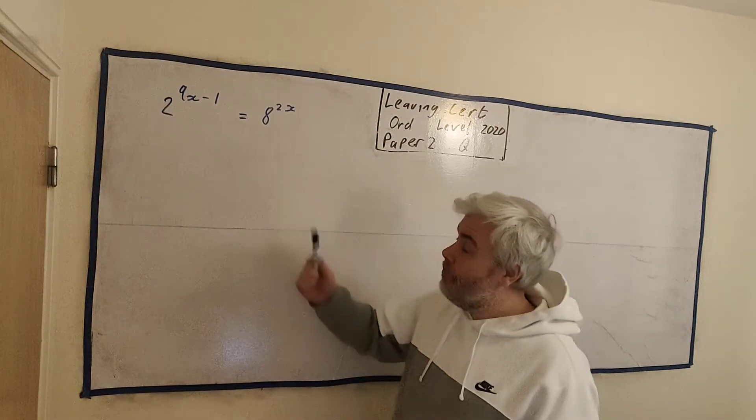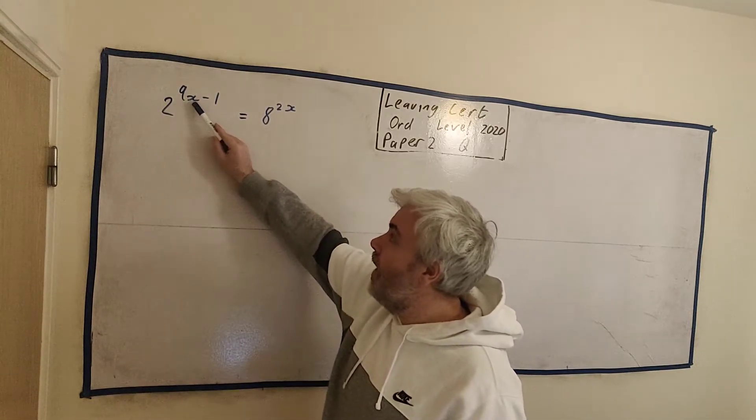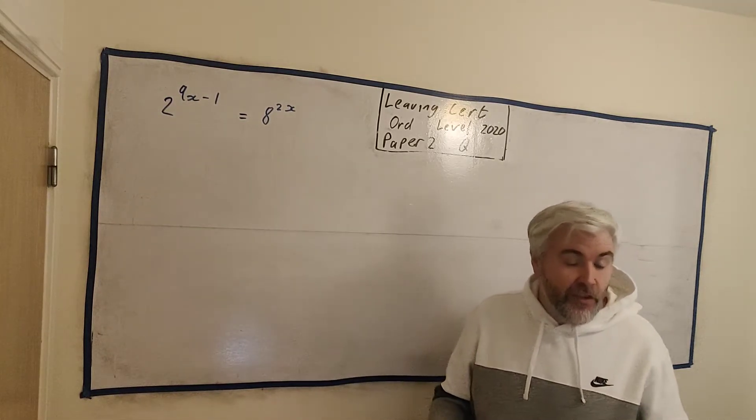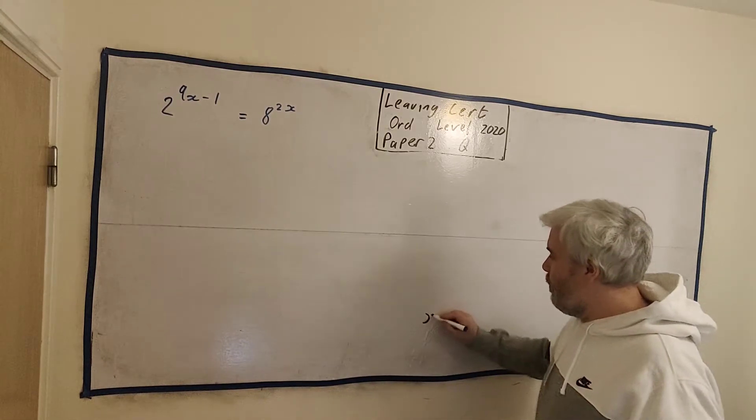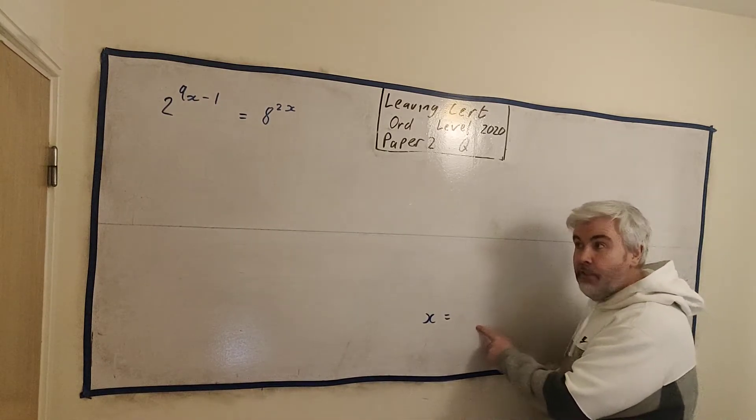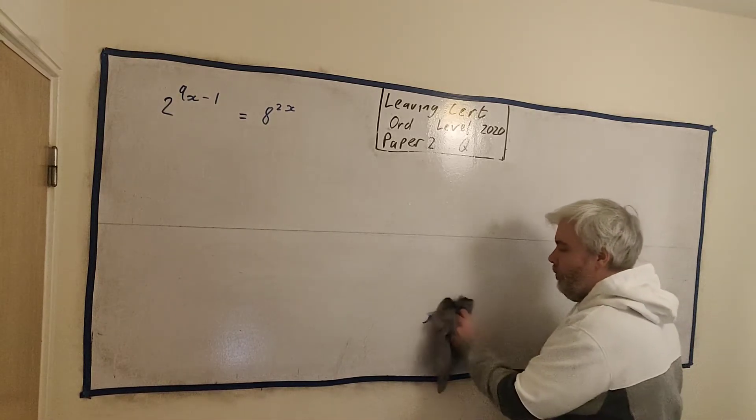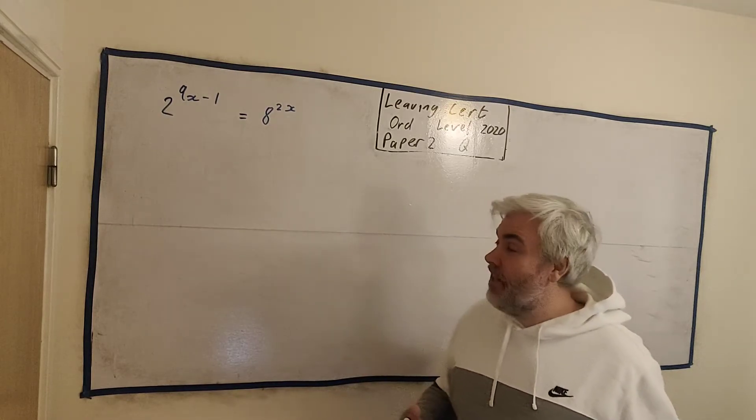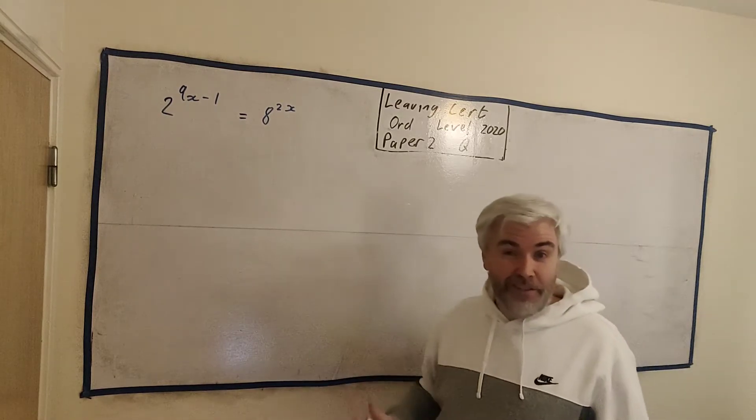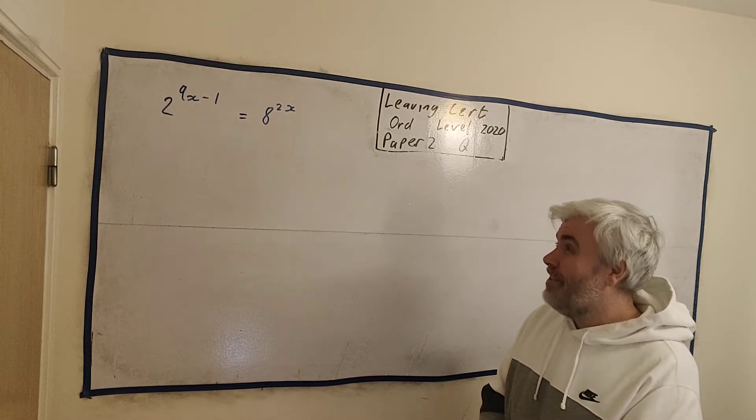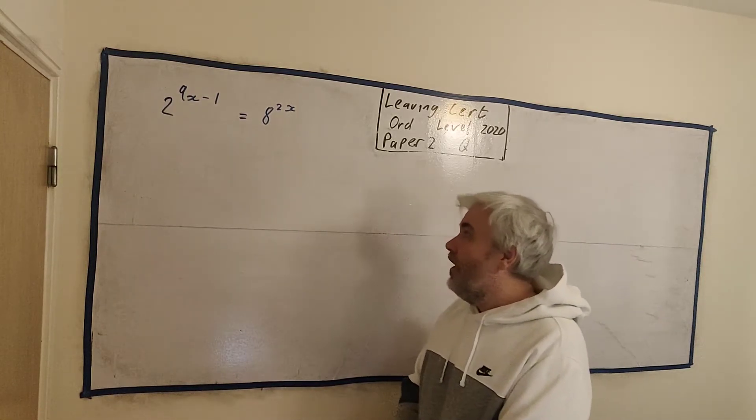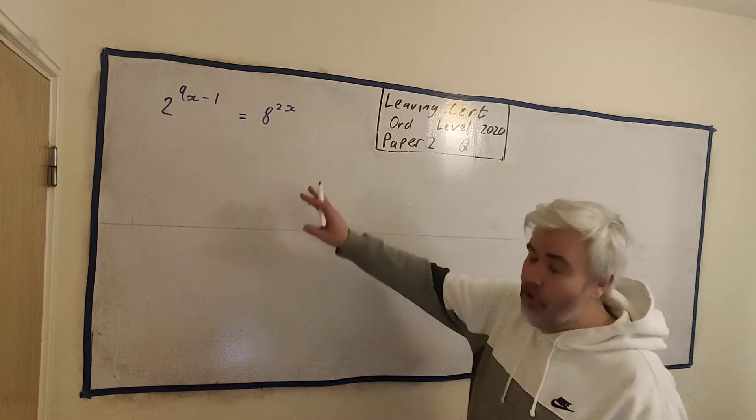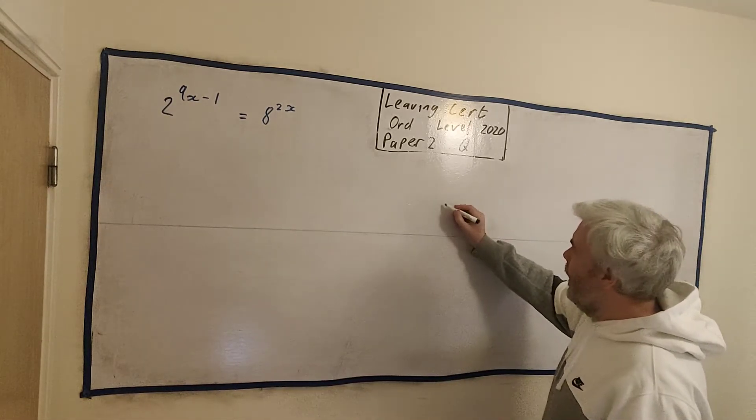Part B gives this algebra equation here. 2 to the power of 9x minus 1 is equal to 8 to the power of 2x. Solve the equation. That really just means find x. When we're finished all of our work, I want x equals a number, hopefully. This is an interesting question, because if you ask your friends that are in honours level or higher level, they have a different way to solve it. They'll use something called logarithmics, which I'd say is probably easier to solve. We don't use anything like that.